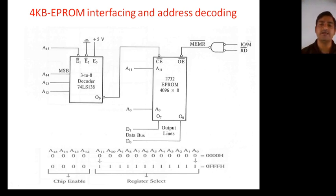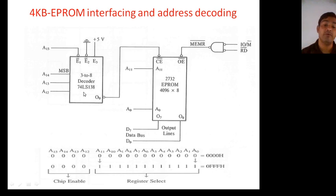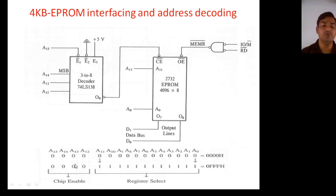In this way you can determine the addressing range — meaning you can access memory from 0000H to 0FFFH only for O0. Suppose this is O7. You have to determine the addressing range. O7 means inputs are 1, 1, 1. So A14 is 1, A13 is 1, A12 is 1, and A15 remains 0. Replacing these values: the upper bits become 0, 1, 1, 1. So the range for O7 is 7000H to 7FFFH. Similarly, you can determine the range for O6, O4, or O3.